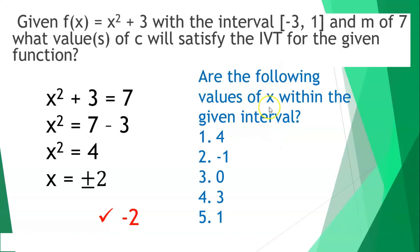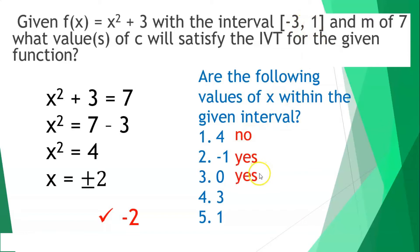Now, are the following values of x within the given interval from negative 3 to 1? What about 4? The answer is no — it is only until 1. What about negative 1? Yes. 0 is a yes. Positive 3 is a no. And positive 1 is a yes because it is a closed interval.